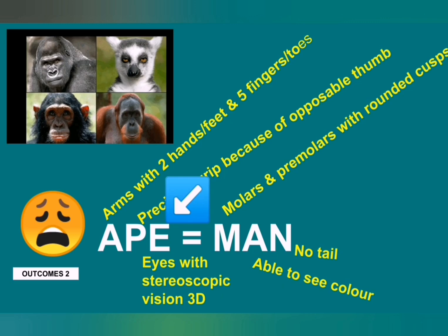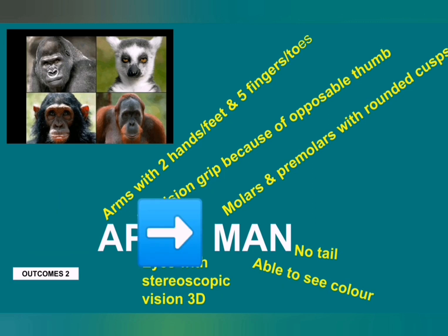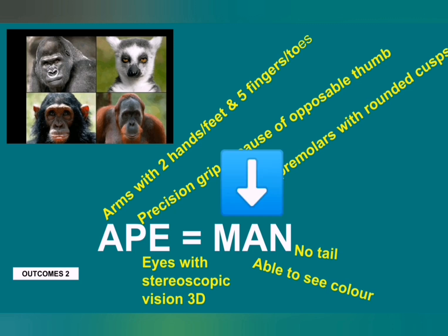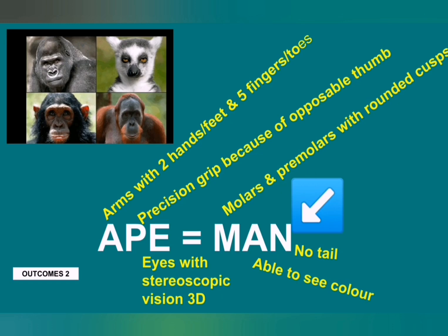You can try covering one eye with an eye patch and walking up and down a staircase — you'll quickly find you can't judge how far the stairs are or the distance you need to put your foot down. The M is for molars and premolars with rounded cusps. In humans and apes, these back teeth have rounded edges instead of sharp edges like other herbivores. The second A is for the ability to see color, and the N is for having no tail.